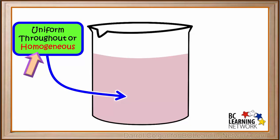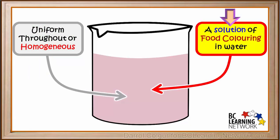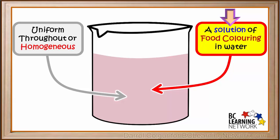It is uniform throughout, or homogeneous. So we can say that this is a solution of food coloring in water. Remember the original food coloring in the dropper and the water in the beaker were both liquids. So this is our second type of solution. We call it a liquid in liquid solution, because both the solute and the solvent started out as liquids.